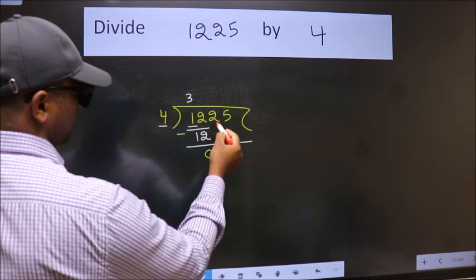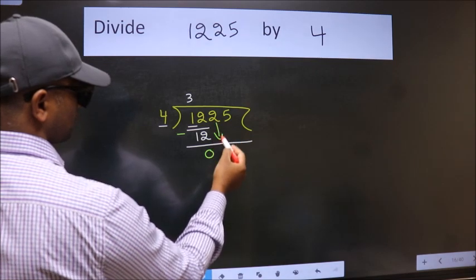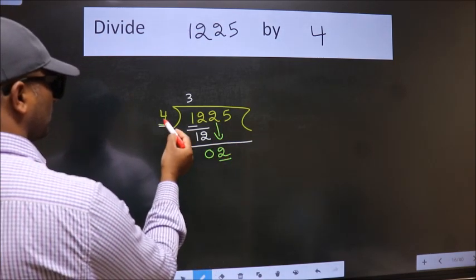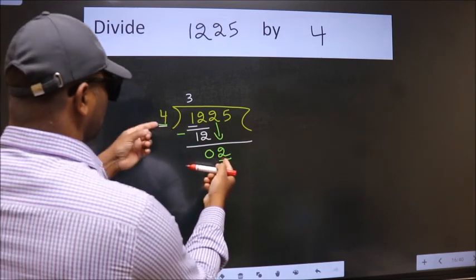After this, bring down the next number. So, 2 down. Now, here we have 2, here 4. 2 is smaller than 4.